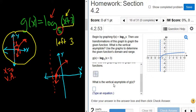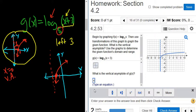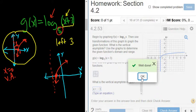What is the vertical asymptote of g of x? Well, that should be x equals negative 3, right? Because we went to the left 3. And it's always x equals for vertical lines. So x equals negative 3. Let's try it. Good stuff.